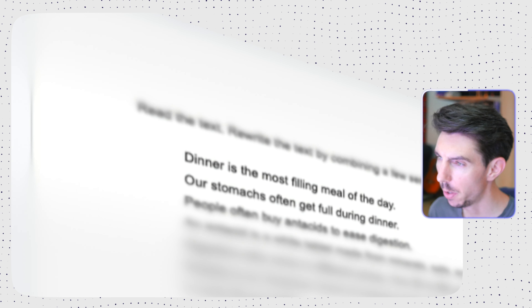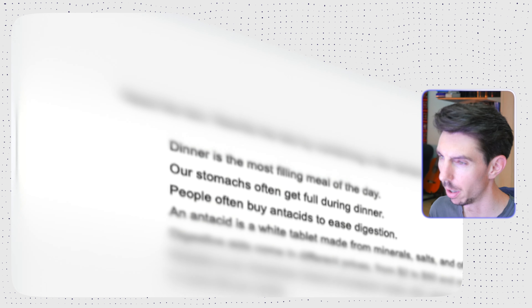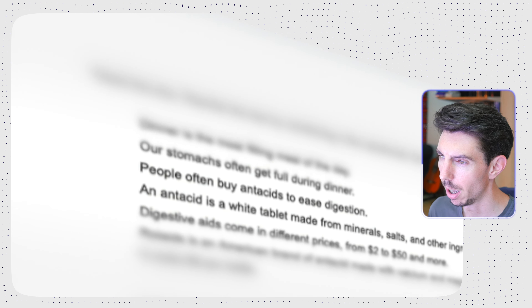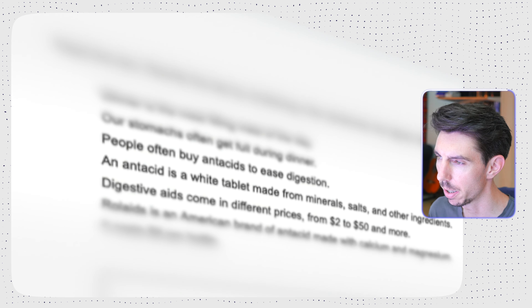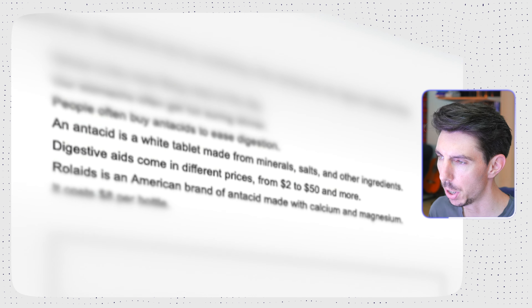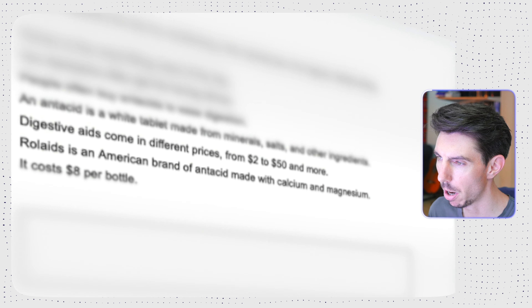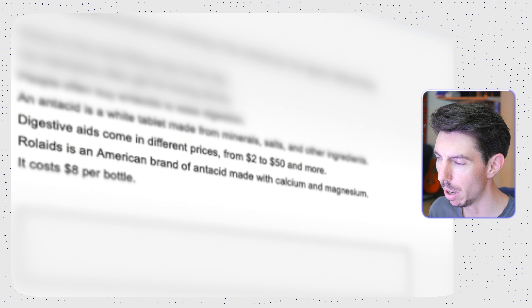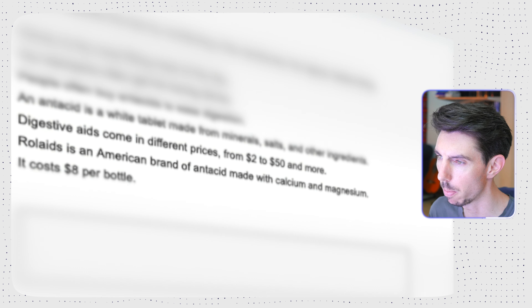So the original text looks like this. Dinner is the most filling meal of the day. Our stomachs often get full during dinner. People often buy antacids to ease digestion. An antacid is a white tablet made from minerals, salts, and other ingredients. Digestive aids come in different prices from $2 to $50 and more. Rolaids is an American brand of antacid made with calcium and magnesium. It costs $8 per bottle.